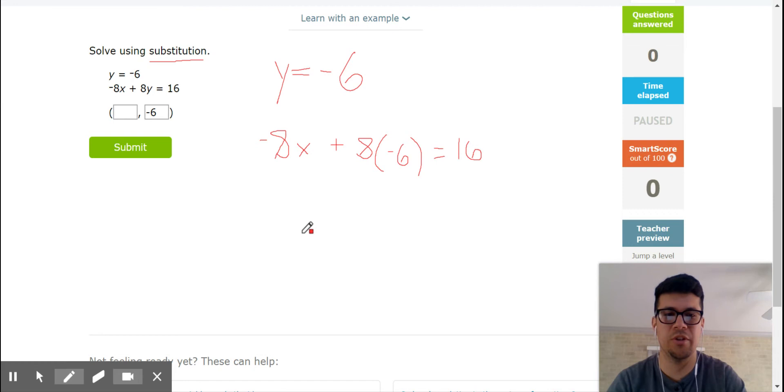So this actually turns out to be a simple linear equation. Negative 8x. Eight times negative 6 gives me negative 48. So negative 8x minus 48 equals 16.